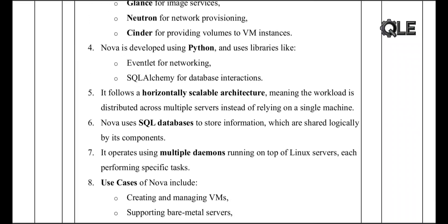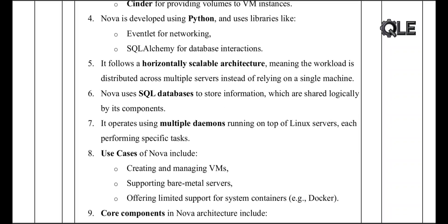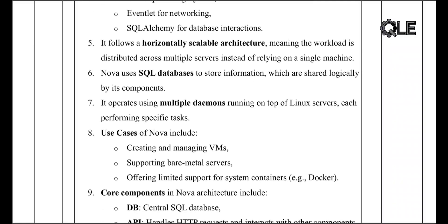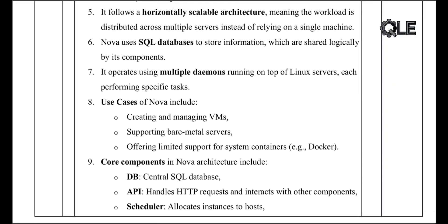Nova is built to scale horizontally — that means it distributes tasks across multiple servers, avoiding dependency on a single machine.